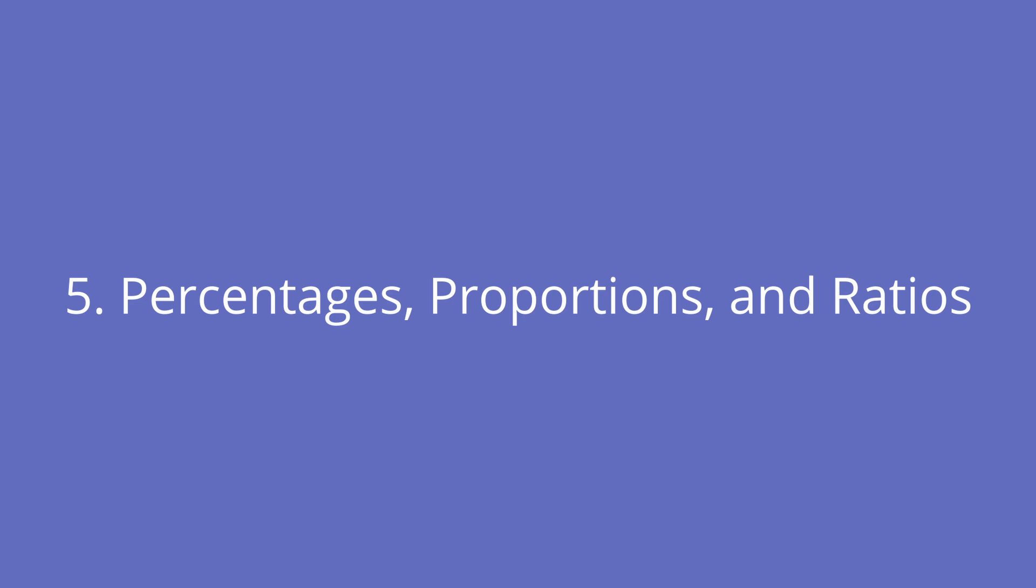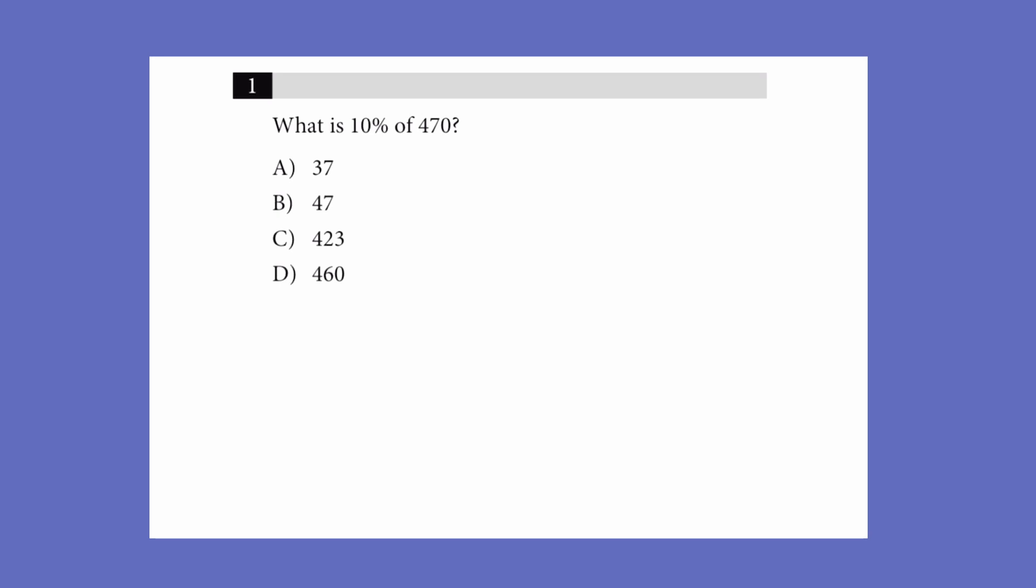So the next most common topic on the SAT is probably these percentages, proportions, and ratio type questions. This one's one of the more simple topics, but it's really important to make sure you're solid on this just because of how much it shows up. So you'll need to know the basics of percentages, proportions, and ratios, which are all similar ways to express probability. And we'll go through some examples here. So this is a very basic percentage problem, but just note that a percentage can be represented as its decimal form. So 10% is equivalent to 0.1 times the value. So 0.1 times 470 is 47.